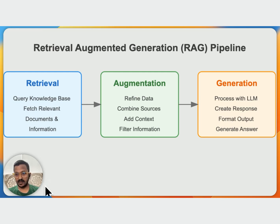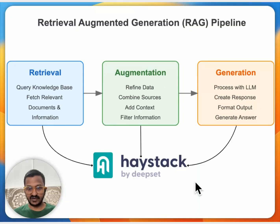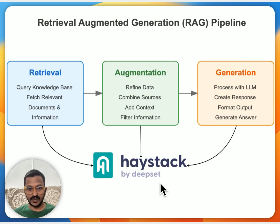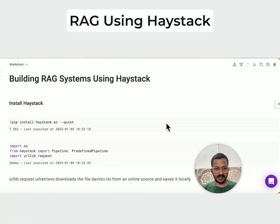Let's understand how we can create a simple RAG pipeline using Haystack. Haystack is an open source framework to help you build production-ready LLM-powered applications. As you can see in the image, you can basically build robust RAG applications using Haystack, which is made by deepset. Here is a step-by-step notebook that shows you how to build a simple RAG system using Haystack.